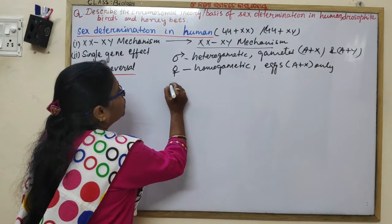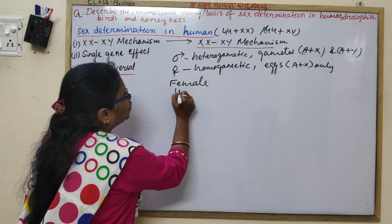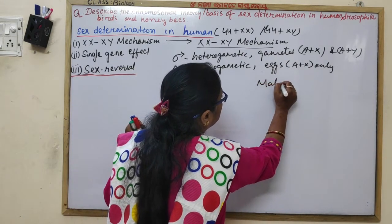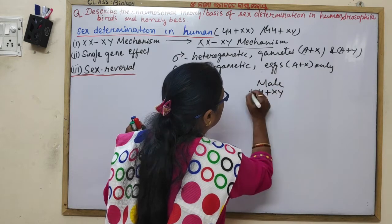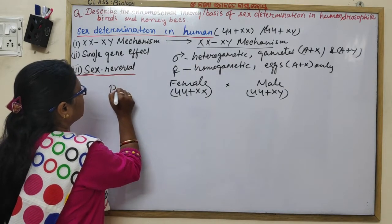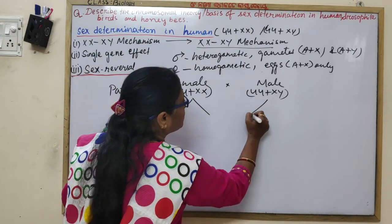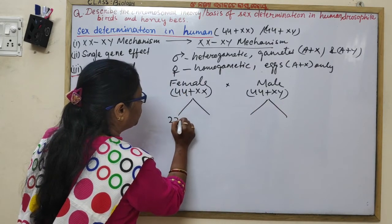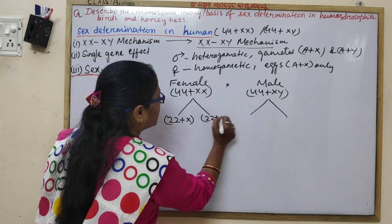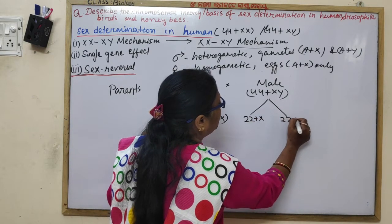Remember to always write: parents, gametes, and offspring clearly in the cross diagram. Do not forget to put the cross sign, and label whether offspring are female or male. In genetics, you can score marks by presenting this cross clearly.